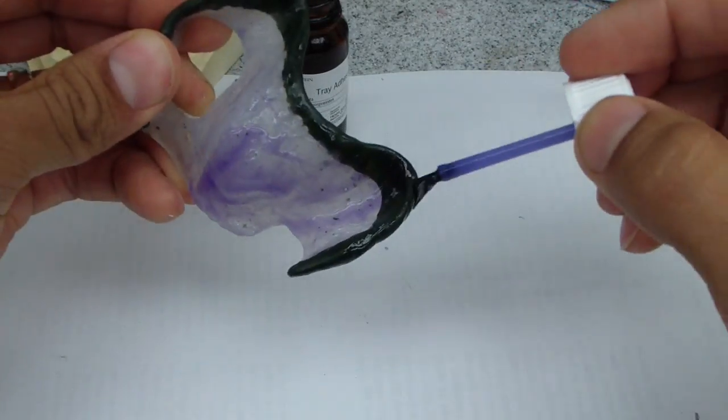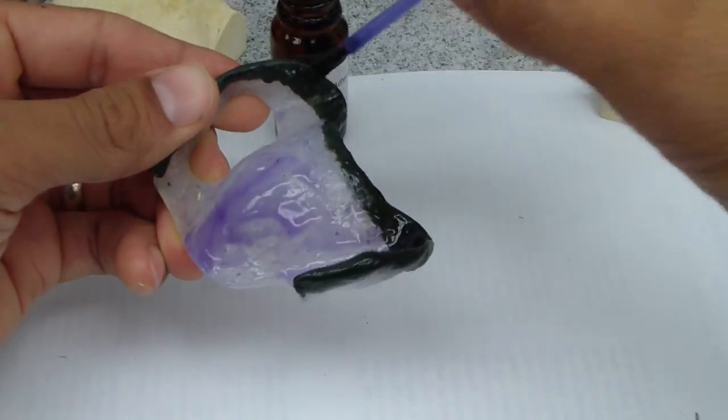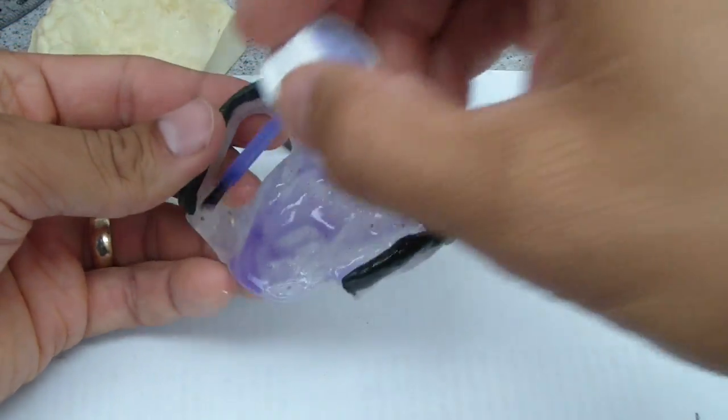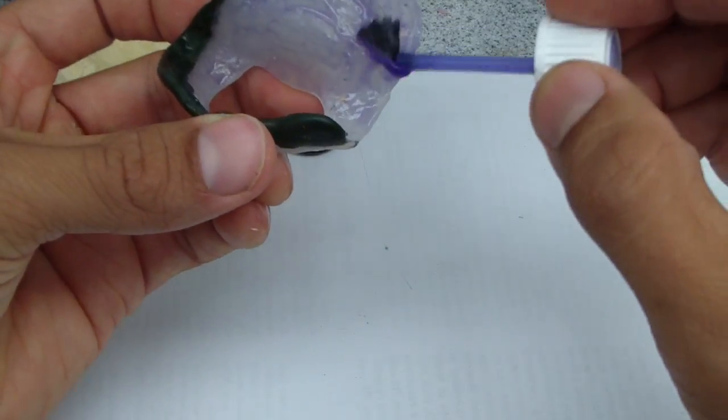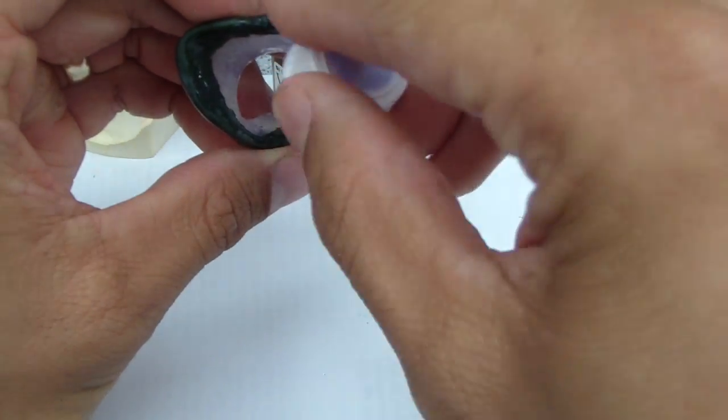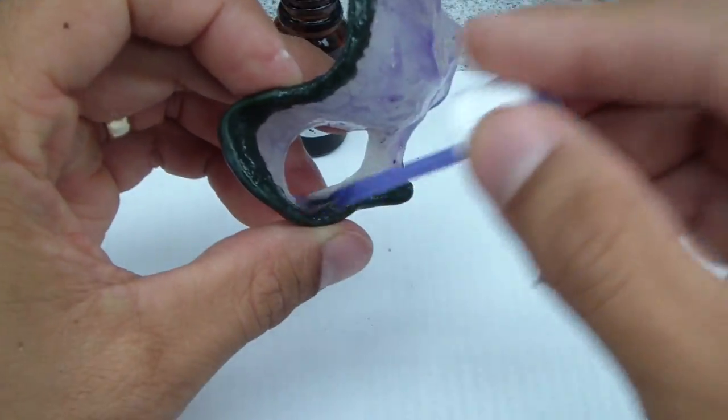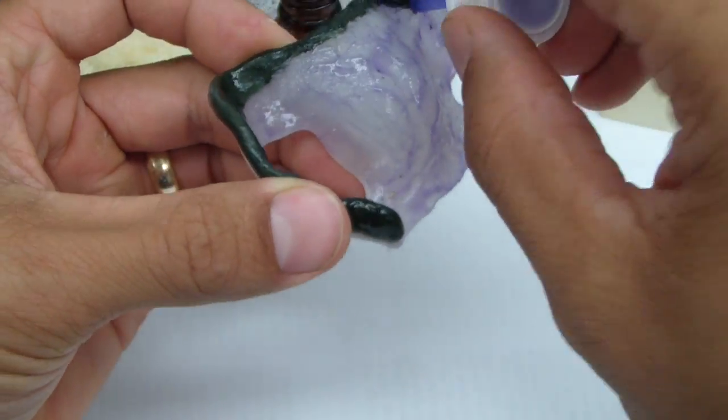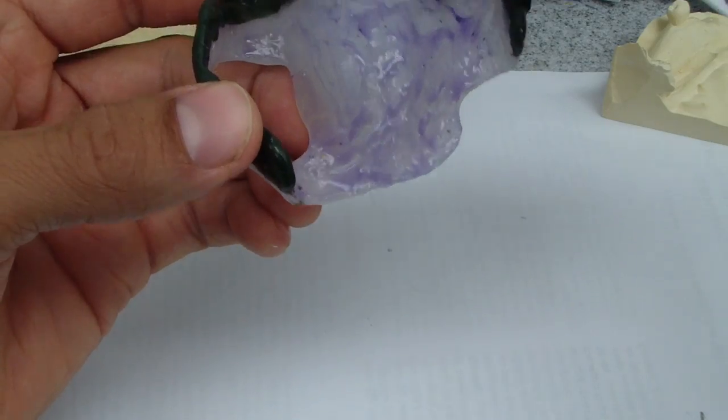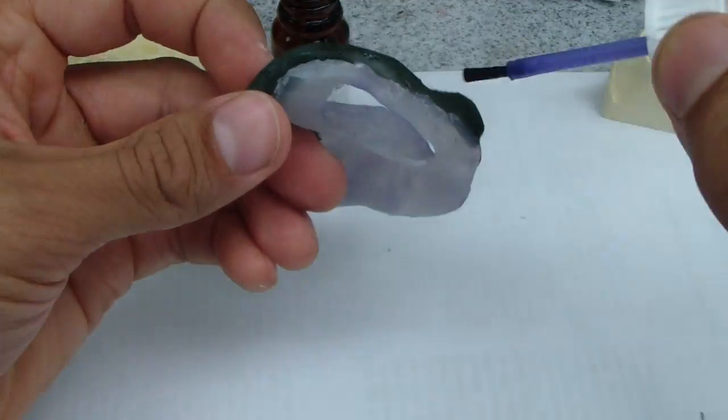So again, this is a sectional impression technique, border molding with a custom tray, and then we'll pick up with a wash, a reline with a light body vinyl polysiloxane or polyvinyl polysiloxane, and then we'll pick up with an alginate.